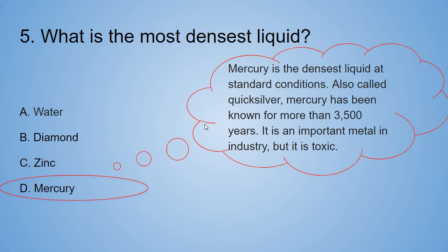It's D. Mercury. Mercury is the densest liquid at standard conditions. Also called Quicksilver, Mercury has been known for more than 3,500 years. It is an important metal in industry, but it's toxic.